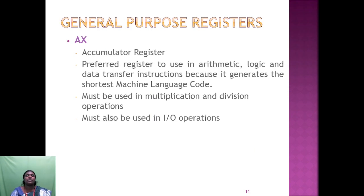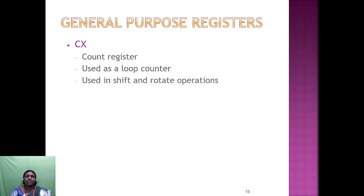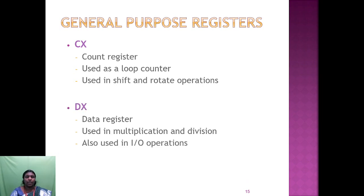AX is the accumulator register — the preferred register for arithmetic, logic, and data operations because it generates the shortest machine language code. It must be used in multiplication and division and IO operations. BX is the base register, also called an address register. CX is the count register, used as a loop counter and in shift and rotate operations. DX is the data register, used in multiplication and division and IO operations.